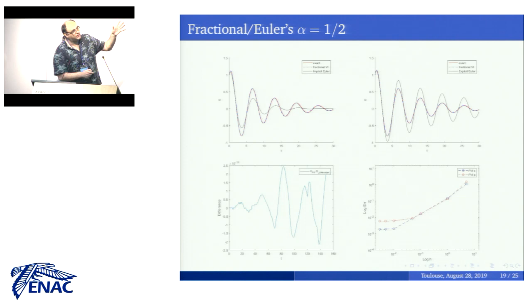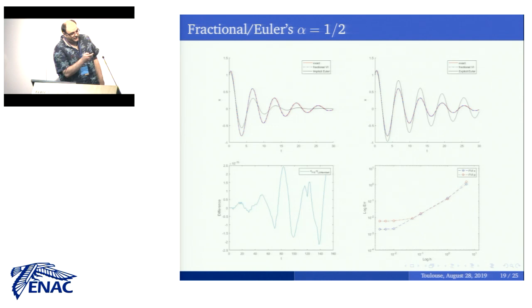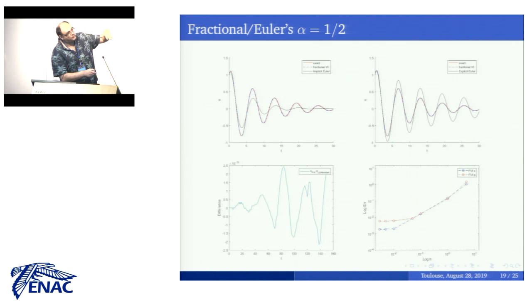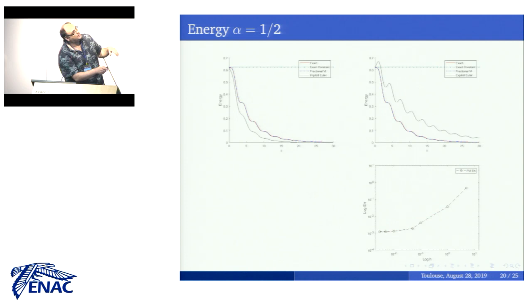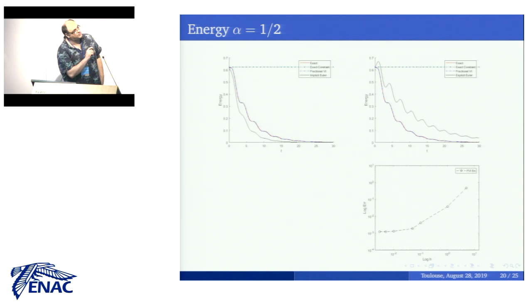Moreover, we see that this method is essentially equivalent to the Lagrange-Lambert method. In terms of convergence, what we obtain is that the method in this region is convergent of order one, but it flattens quite fast. The same happens for the energy. This convergence plot is both for configuration and velocity. In terms of energy, the tracking is much better than the other methods, and in terms of convergence it's quite the same as for configuration and velocity.